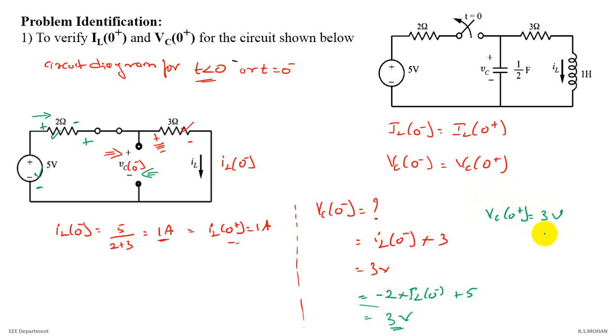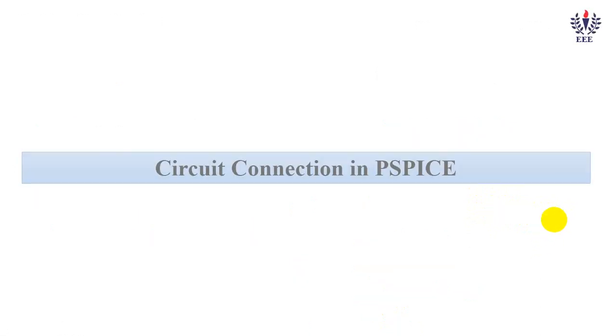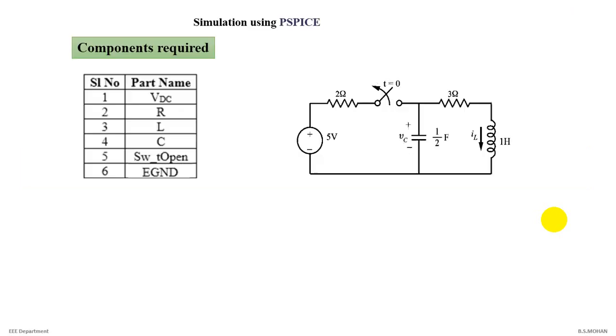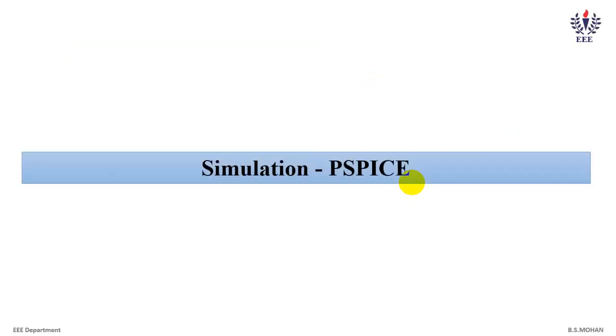This is your theory calculations. Now let us move on to circuit connection in PSPICE. What all components are required here? We need 1 VDC, we need 2 resistances, we need 1 L and 1 capacitance. At t greater than 0, the switch is open. Thus we need switch open and 1 common ground for the circuit.